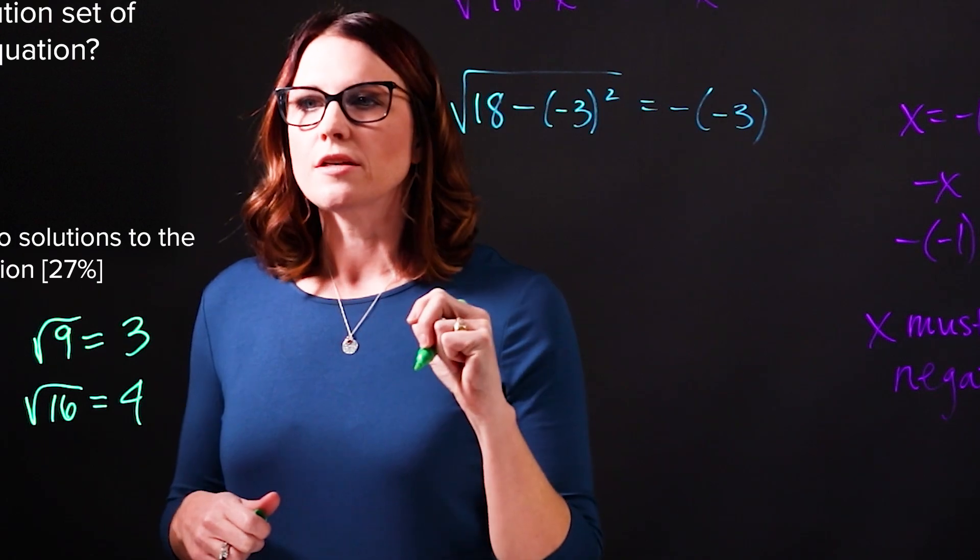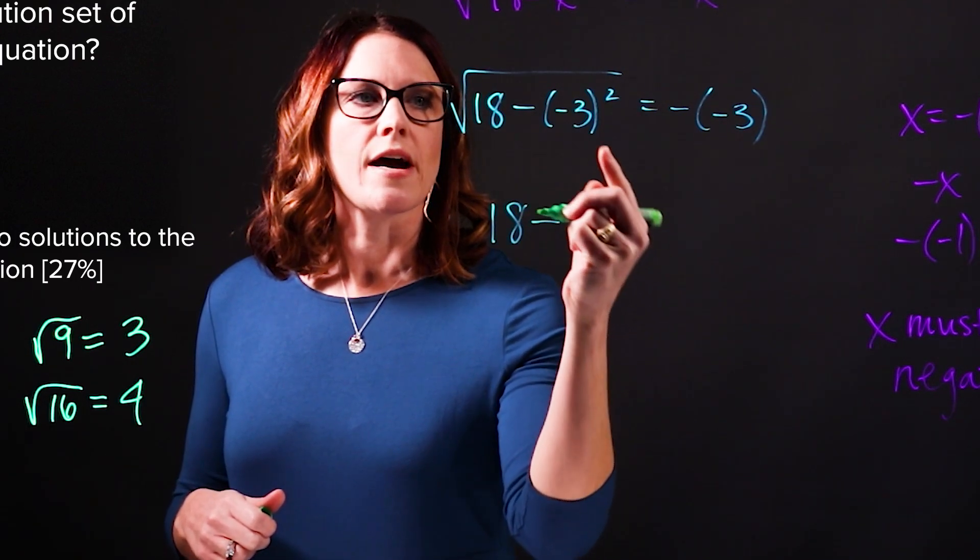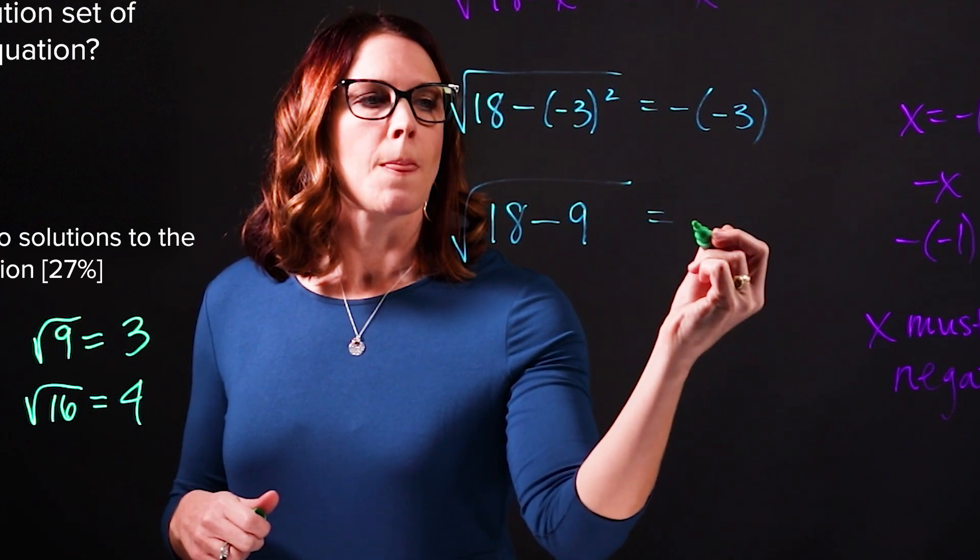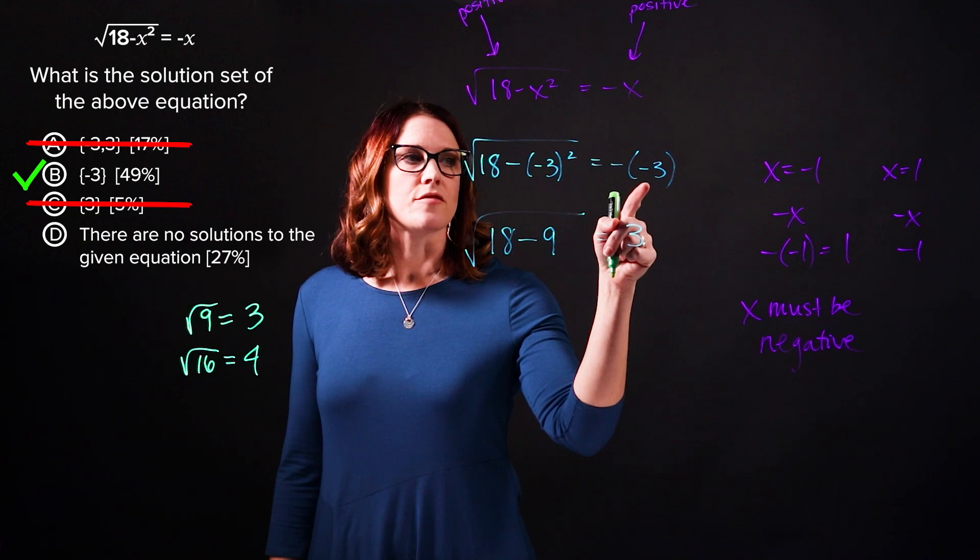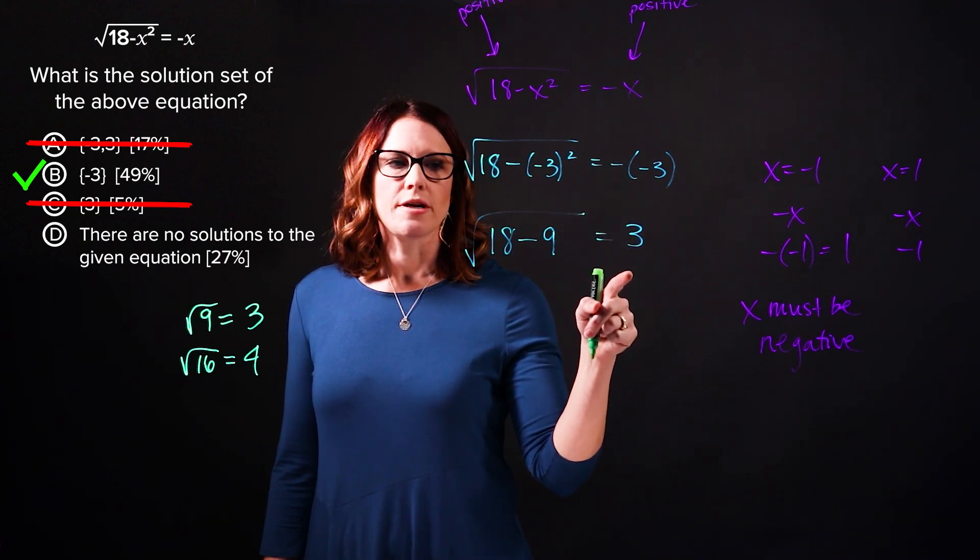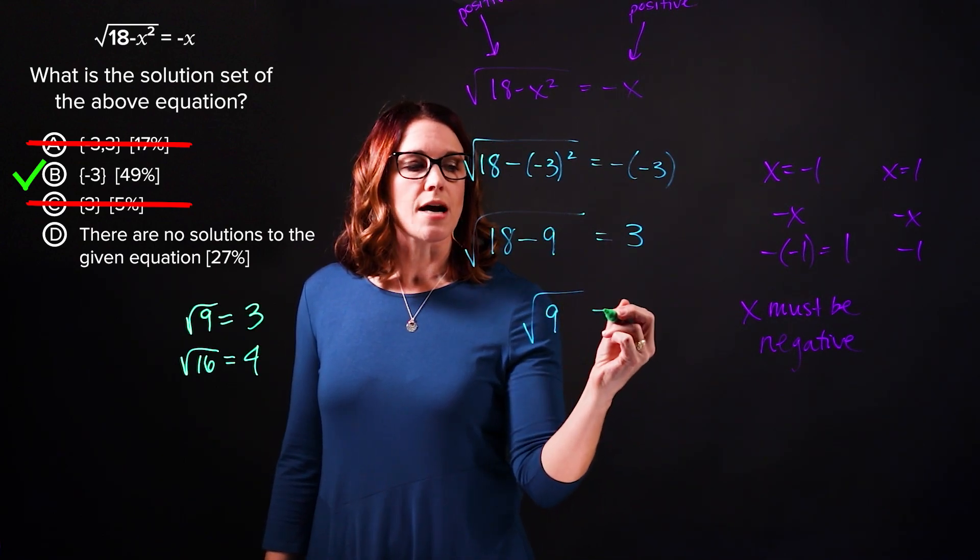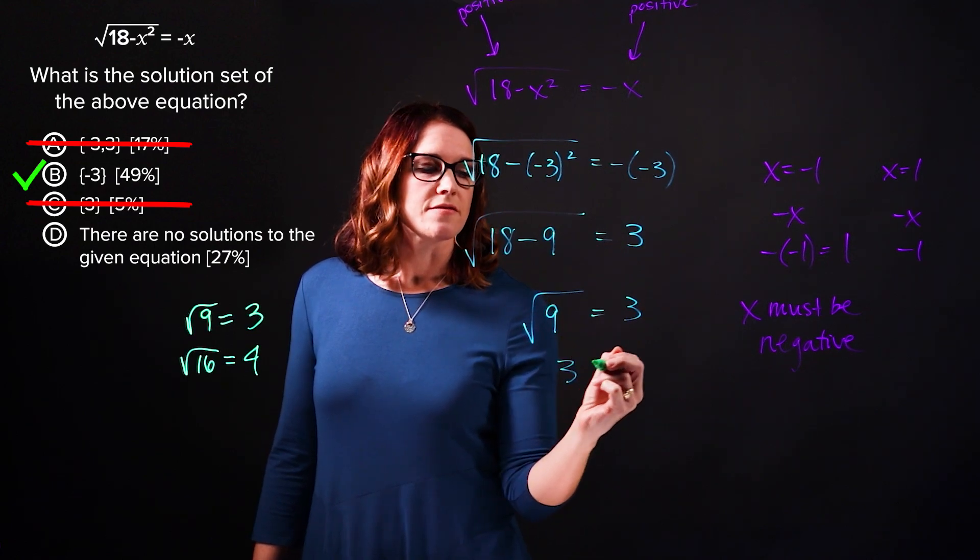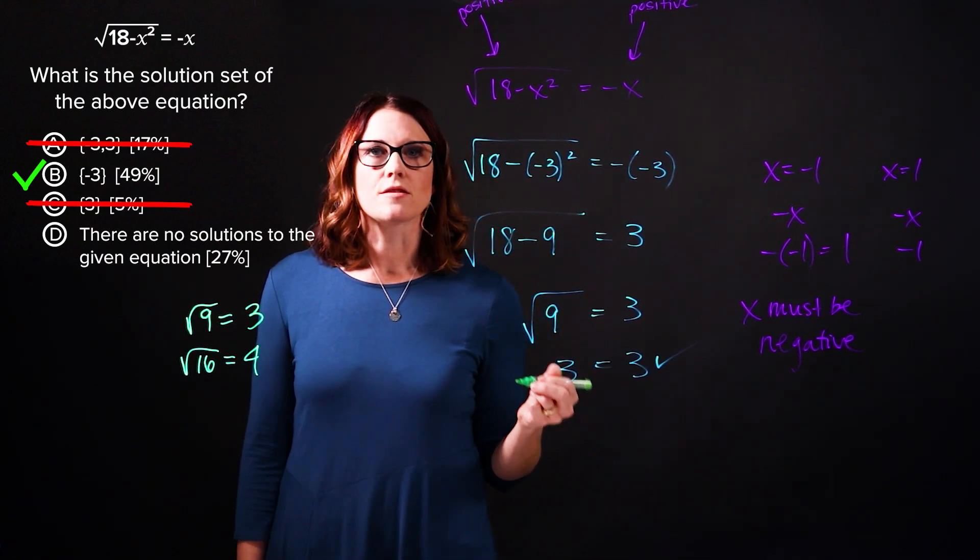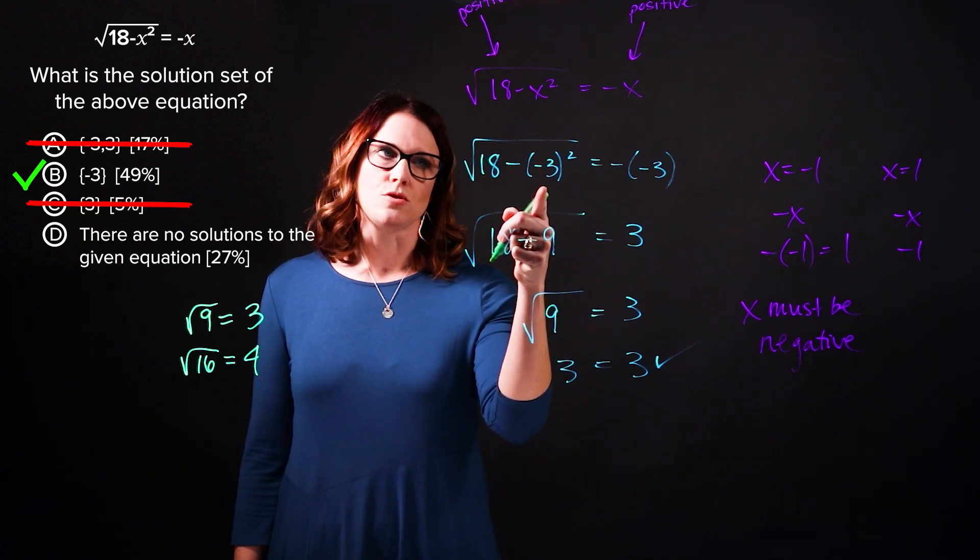I'm going to evaluate the expression under the radical first. So I have negative 3 squared, that's equal to 9. I have negative negative 3, so the negatives cancel out and we end up with positive 3. 18 minus 9 is 9. So I have the square root of 9 equals 3, and that is in fact true. And that tells us that the solution to the equation is negative 3, so that is our solution set.